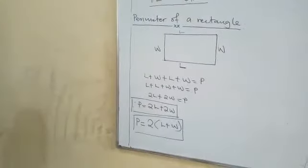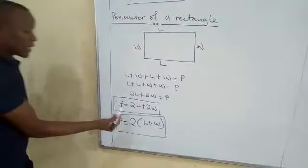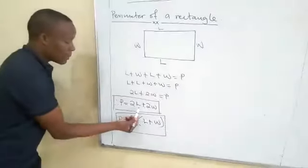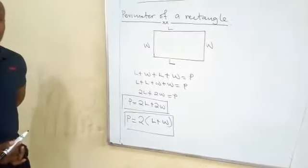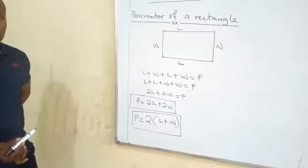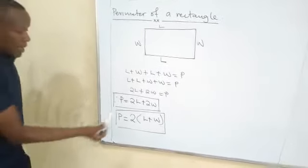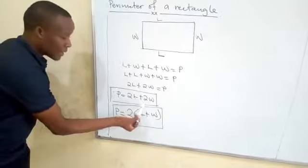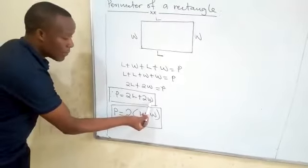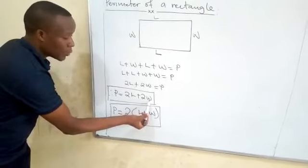Perimeter of a rectangle is equal to two lengths plus two widths. L represents length, while W represents width.